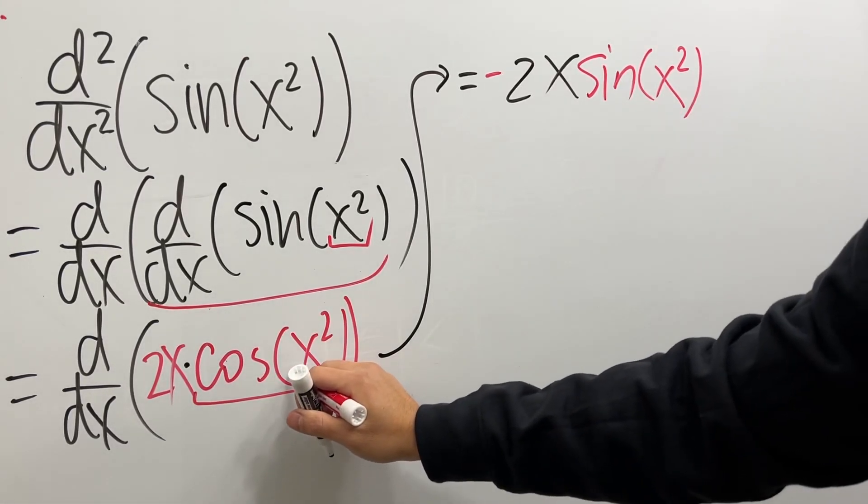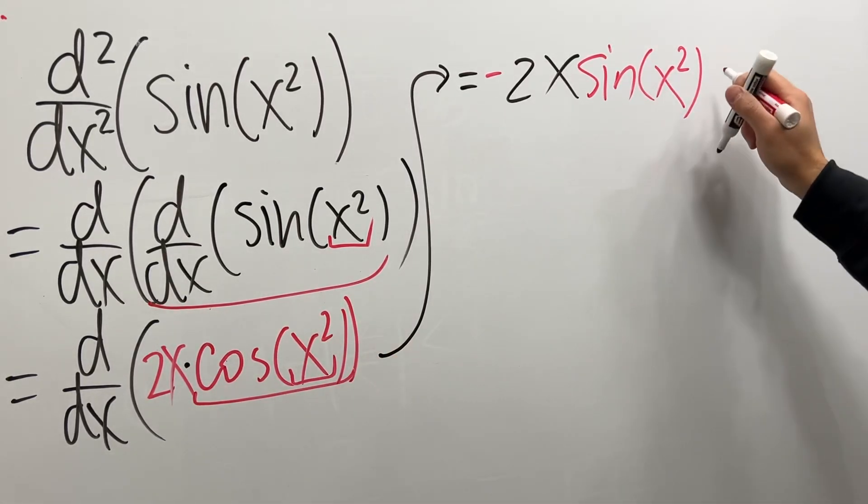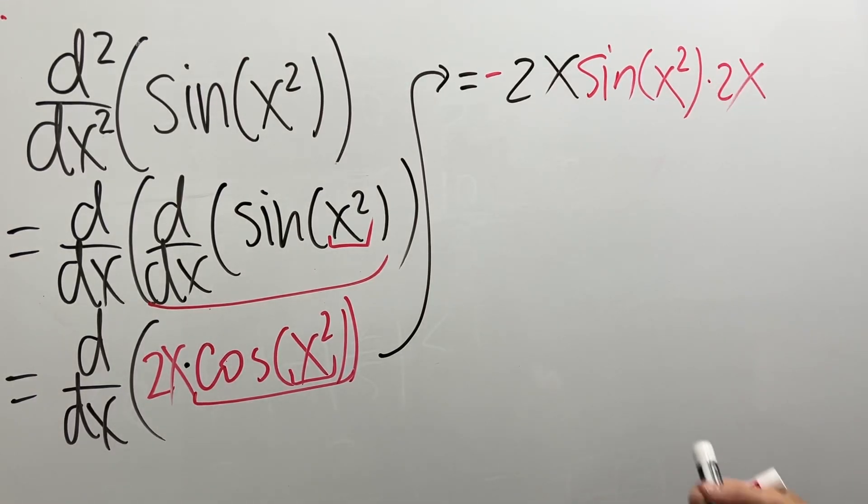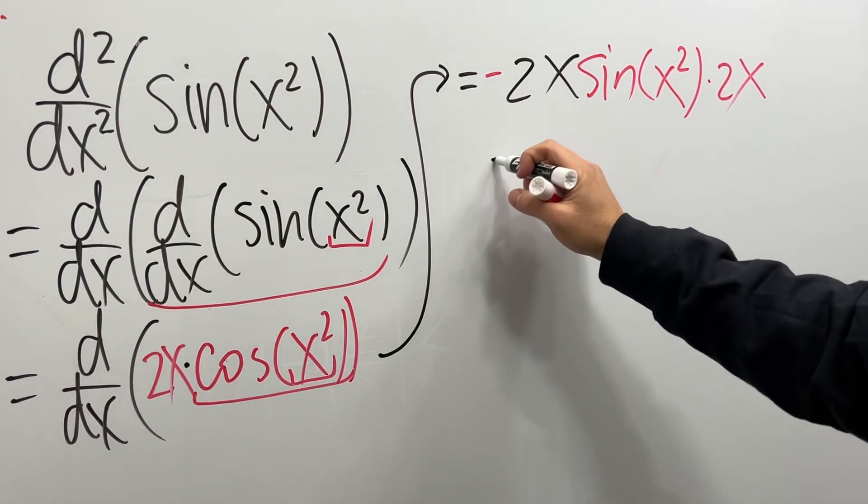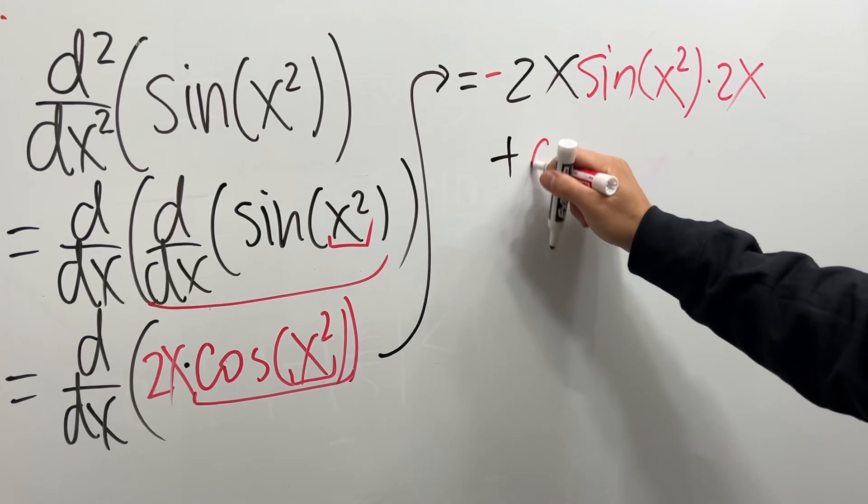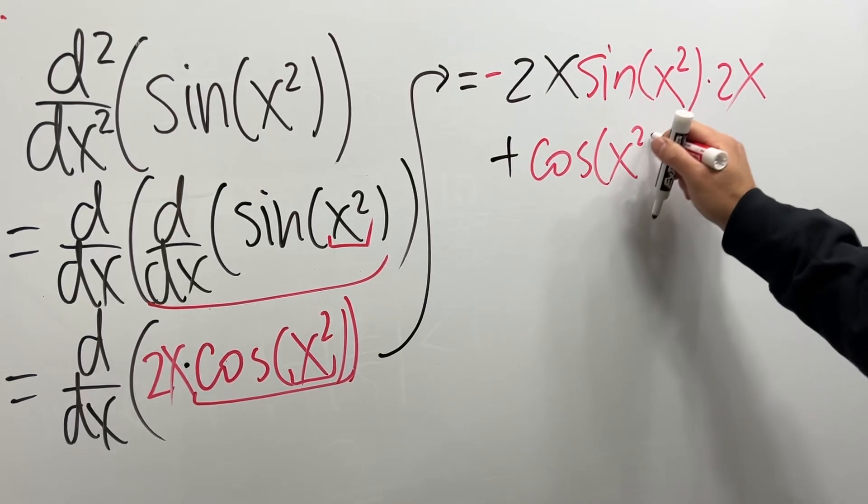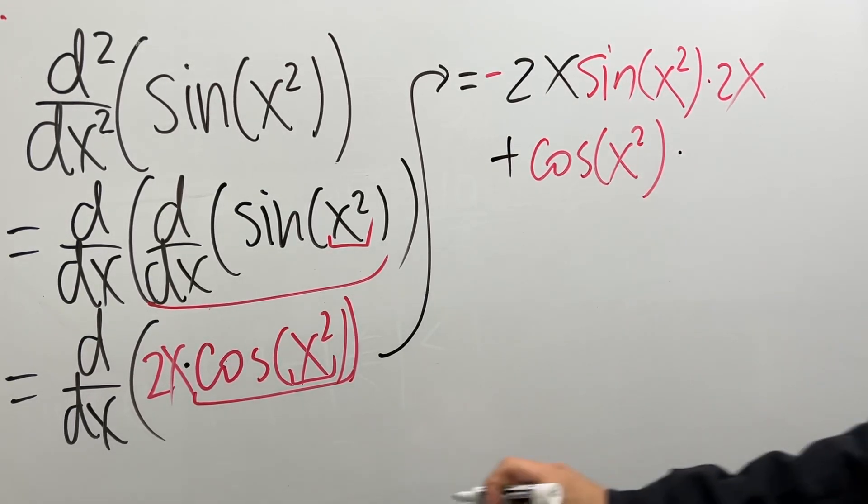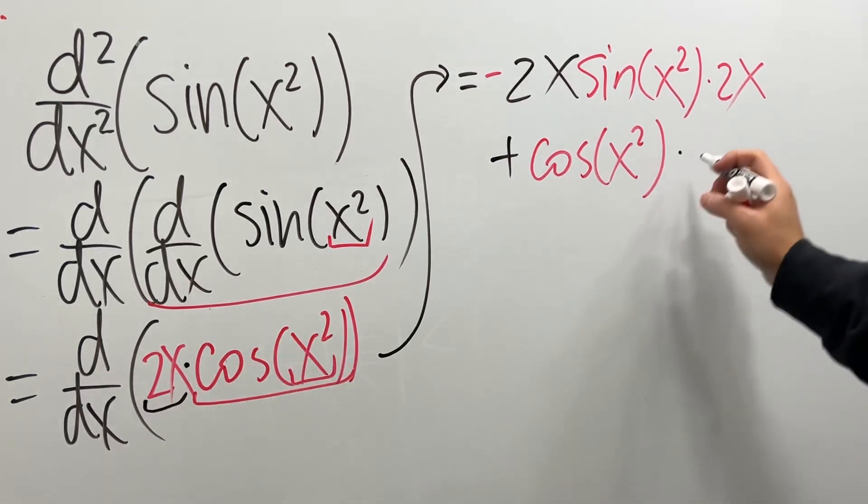And don't forget to use the chain rule right here again. So, multiply by 2x. And then, we are going to add the second function, which is cosine of x squared. And then, we are going to multiply by the derivative of the first, which is just a 2.